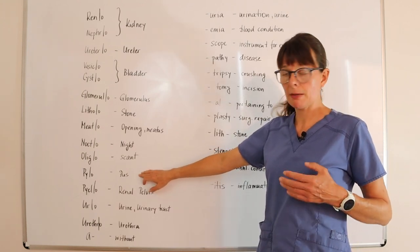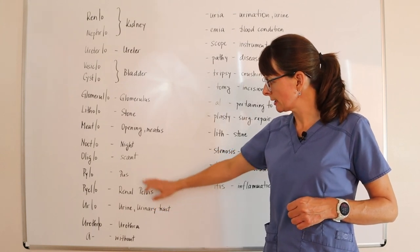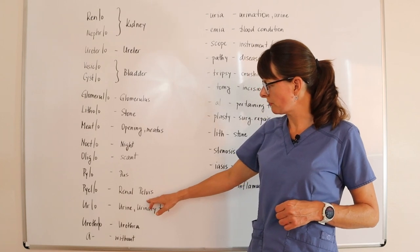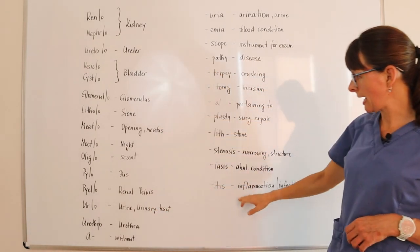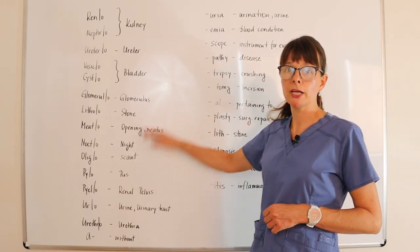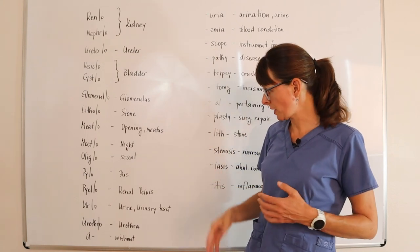Pyo meaning pus, so pyelonephritis: pyelo is the renal pelvis, nephro is the kidney, and -itis is inflammation. Py-, an example is pyuria, pus in the urine or what looks like pus, an infection.